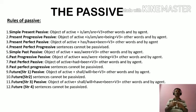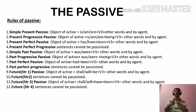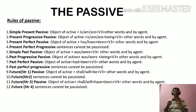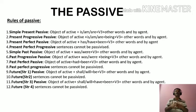Now let us go through the next one, that is past progressive passive. In past progressive passive, we will have: the object of active plus was or were plus being plus V3 plus other words and by agent. Now the seventh one, that is past perfect passive. The rule is: object of active plus had plus been plus V3 plus other words and by agent. Now the eighth one, that is past perfect progressive, and past perfect progressive sentences cannot be passivized.